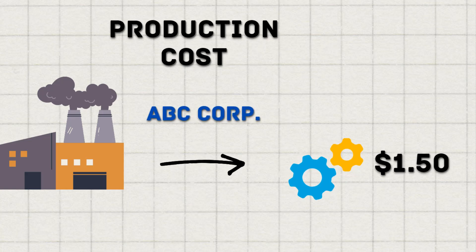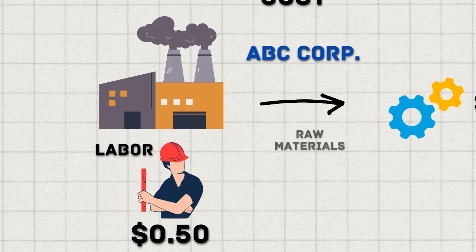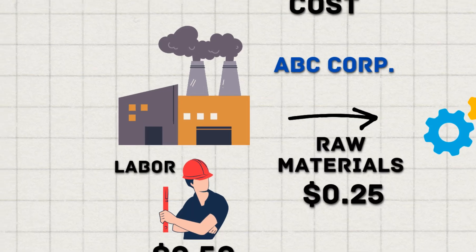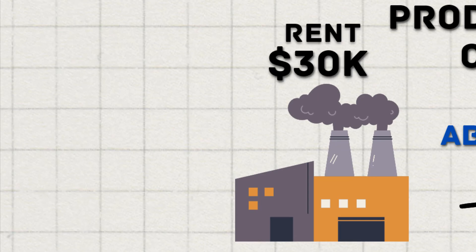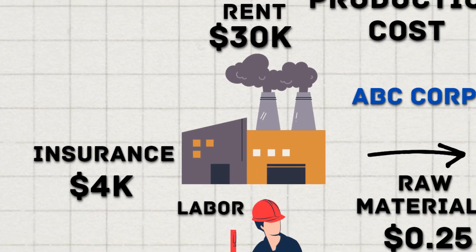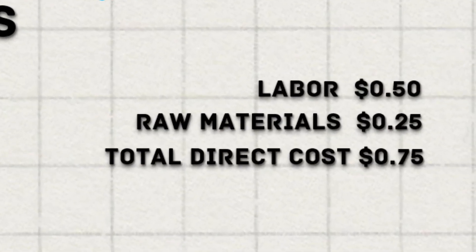ABC Corporation produces widgets. The cost of labor to manufacture one widget is 50 cents, and the cost of raw materials is 25 cents per widget. ABC's monthly rent for its factory is $30,000, and monthly insurance is $4,000. Assume ABC needs 100,000 widgets in the month.